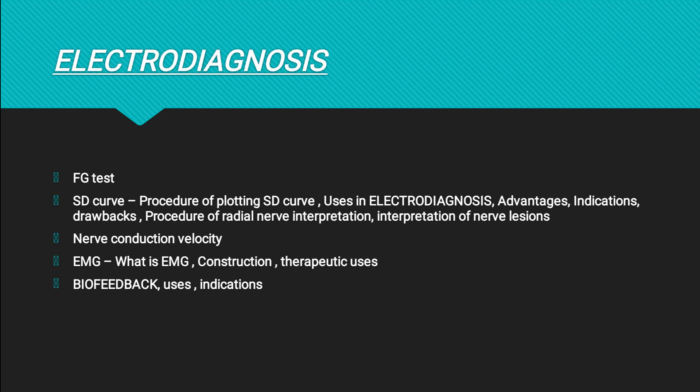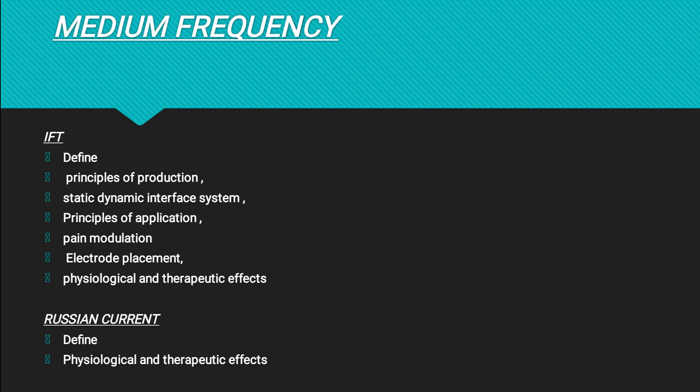We have all these questions from SD curve — how to plot an SD graph, what is the importance of SD curve in physiotherapy, how to interpret it. Moving on, we have EMG and biofeedback, and then nerve conduction velocity studies. From medium frequency, we have IFT — principles and production, physiological and therapeutic effects, static and dynamic interference system, and how pain is modulated through IFT. Also, defining the uses of IFT in management of stress incontinence.